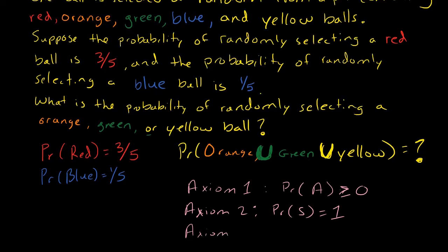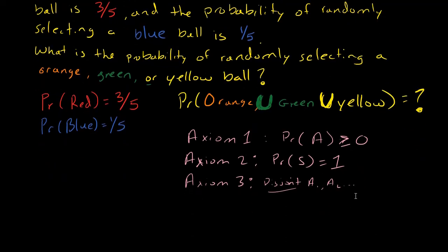And briefly, the third axiom says that if I had an infinite sequence of disjoint events - so disjoint A₁, A₂, etc., that's very important for axiom 3 - then as long as the events are disjoint, the probability of the union of those events is equal to the sum of their probabilities.